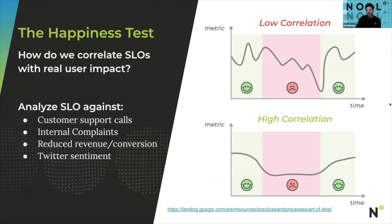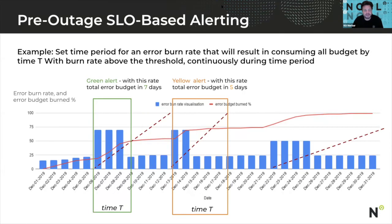When you're defining SLOs, it's very important to do the happiness test. If you have a failure that nobody notices, is it really worth paging somebody in the middle of the night, or can you safely ignore it?